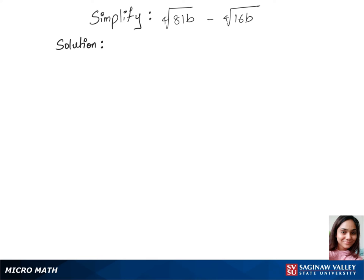Let's simplify this question. We'll assume all variables represent non-negative real numbers. We'll write our first step by separating the terms, so that's fourth root of 81 times fourth root of b